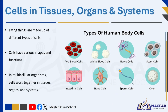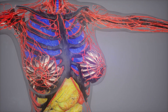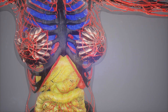All living things are made up of different types of cells. These cells come in various shapes and sizes, and each type has a specific function that helps the organism survive and function properly. In multicellular organisms, cells do not work alone. Instead, they are organized into tissues, organs, and systems that work together to perform vital processes.